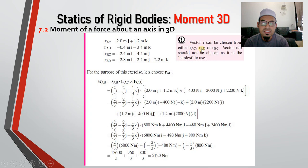So next is, look at this information. Vector R can be chosen from either R_AC, R_AD, or R_BC. Vector R_BD should not be chosen as it is the hardest to use. So you can choose R_AC, R_AD, or R_BC. Or if you choose R_BD, then it is okay, no problem. But maybe your working step is much more difficult or hardest to use.